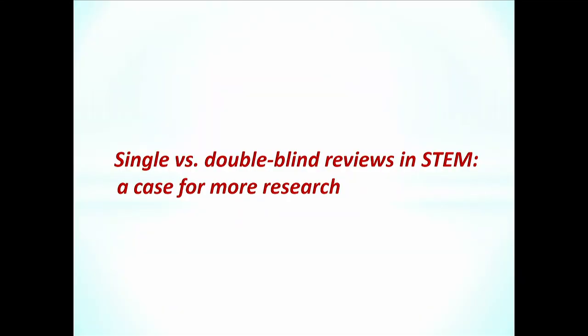I said I will talk about three examples; I'll start with the first. It deals with single versus double-blind reviews in journals in the sciences, and I want to make a case for more research. The question of single versus double-blind reviews came up the first day of the conference, and we have this perspective that in the sciences almost everything is single-blind reviews and that is okay — we know each other, we're objective — and I want to show you data that might suggest something different.